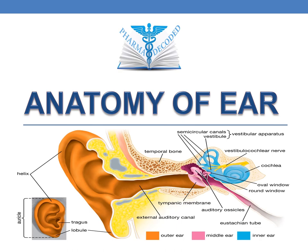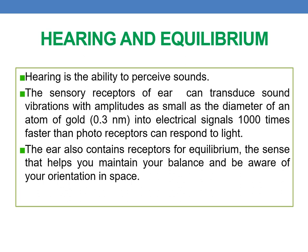Hello everyone. Let us discuss the anatomy of the ear. The major function of the ear is hearing — the ability to perceive sounds. The sensory receptors of the ear can transduce sound vibrations with amplitudes as small as 0.3 nanometers (the diameter of a gold atom) into electrical signals, a thousand times faster than photoreceptors can respond to light. The ear also contains receptors for equilibrium, helping you maintain balance and be aware of your orientation in space.